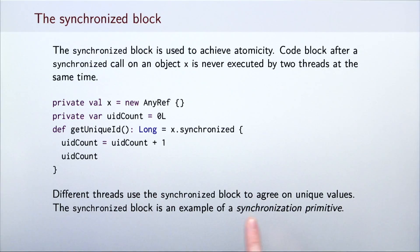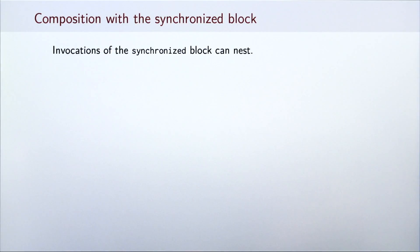The synchronized block is an example of a synchronization primitive, a construct that allows different threads to exchange information. Importantly, multiple synchronized blocks can compose. This composition is achieved by nesting different synchronized blocks. Let's see how this works.